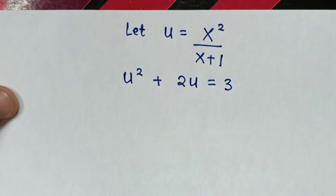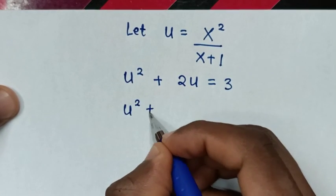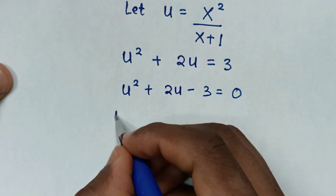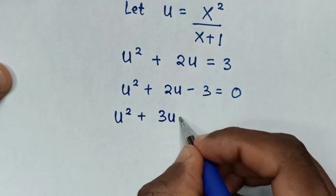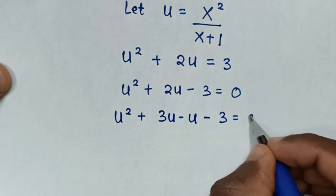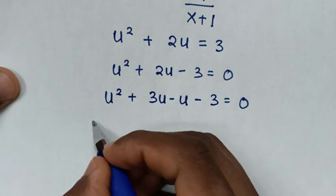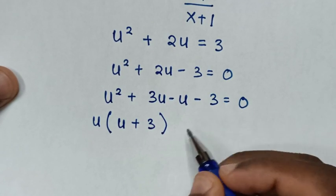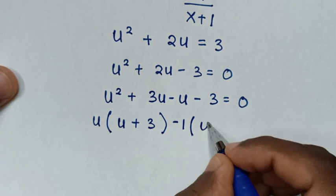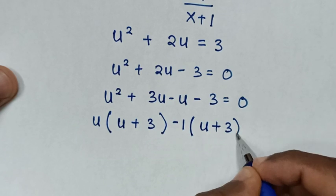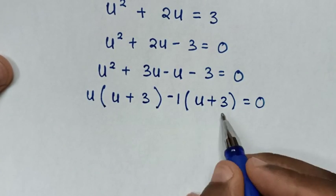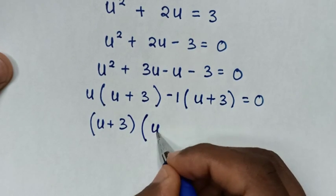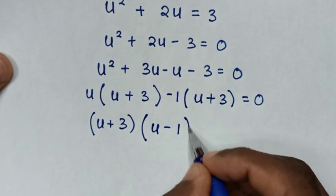In the next step we take 3 to the left side, so it will be u squared plus 2u minus 3 is equal to 0. We solve this quadratic equation by factorization: u squared plus 2u is the same as 3u minus u, then minus 3 is equal to 0. Here u is common, so take u out of bracket: u plus 3. Then negative 1 is common: negative 1 times (u plus 3) is equal to 0.